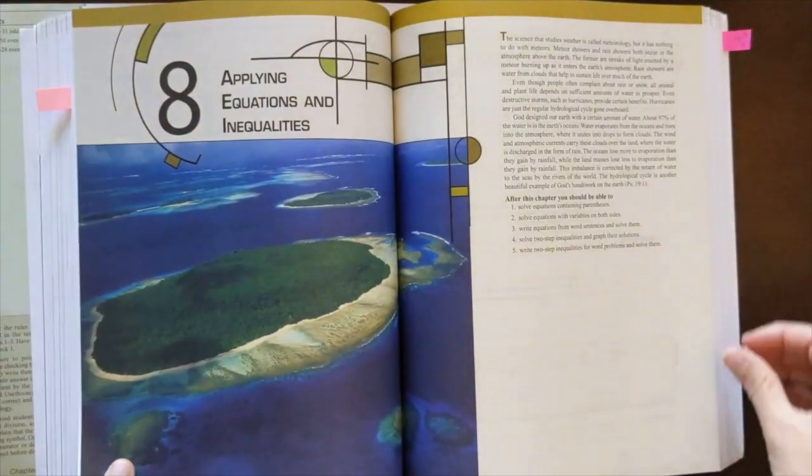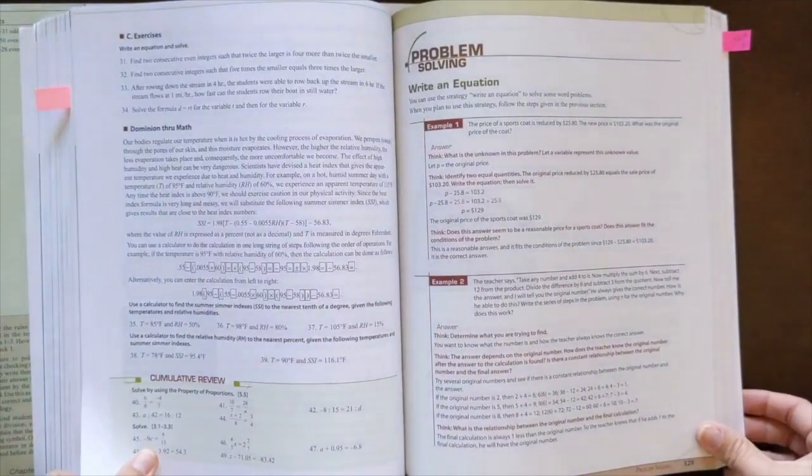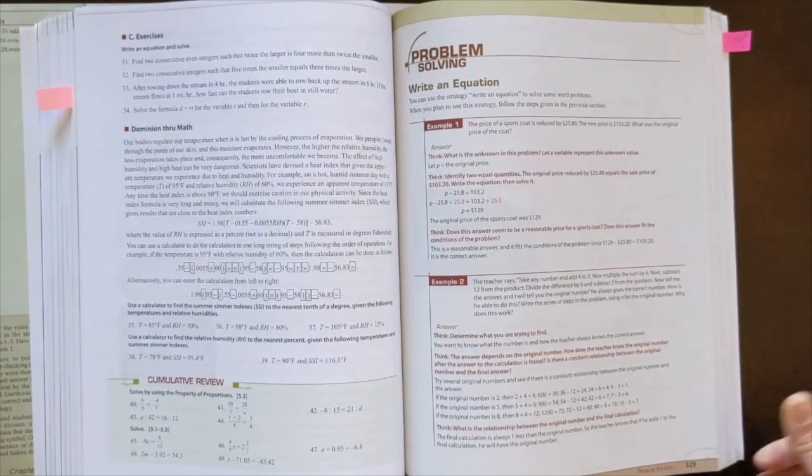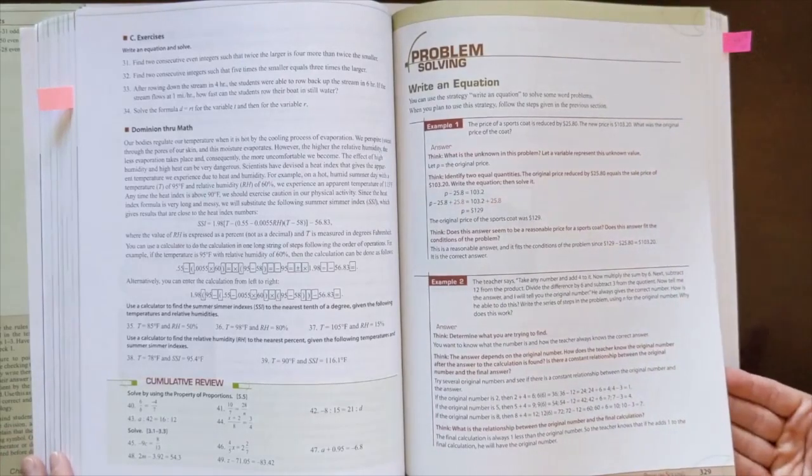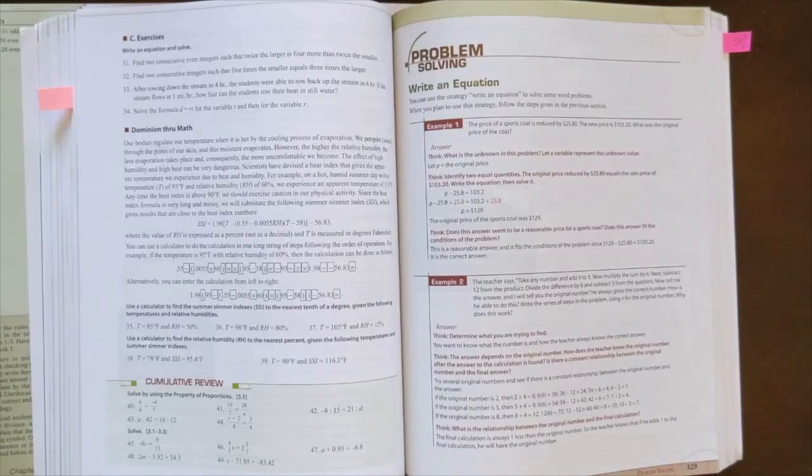I'm going to flip through here just a little bit more to give you an idea of what is in the student text here. The problem solving sections are really helpful. Those are helping kids to learn to think more critically and that's going to help build their critical thinking skills. Critical thinking skills are something that can be taught and that can be built. That is something that is worked in with the problem solving sections. So those are really nice to have in every chapter as well.